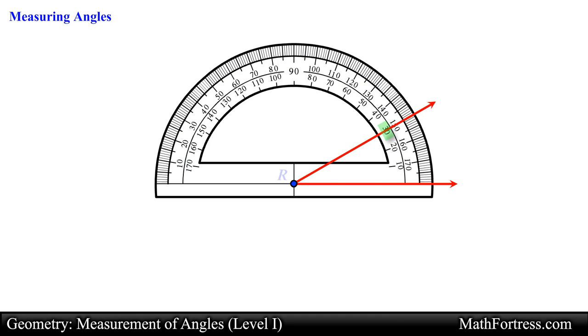For example the measure of angle r is 30 degrees. Similar to the measurement of a line segment the measurement of an angle is denoted in a distinct manner.